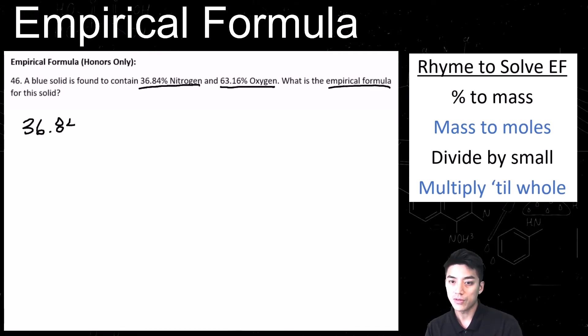So first, we're going to write down 36.84, and we're going to change percent to mass. So replace the percent sign with g, which stands for grams. So that is the first part of the rhyme, percent to mass.